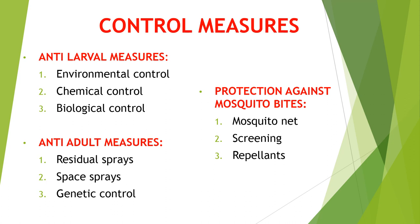Now we will see the control measures for mosquitoes. Control measures can be divided into anti-larval measures, anti-adult measures, and protection against mosquito bites. In anti-larval measures: environmental control, chemical control, and biological control. In anti-adult measures: residual sprays, space sprays, and genetic control. In protection against mosquito bites: mosquito nets, screening, and repellents.